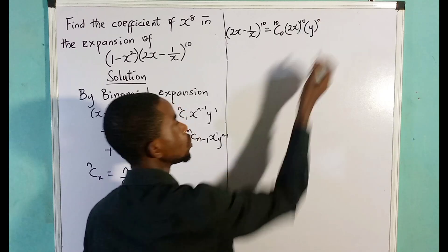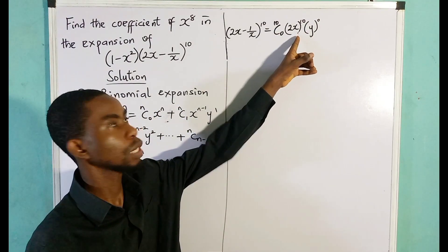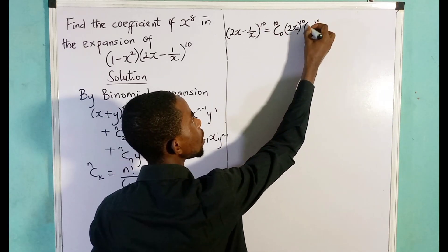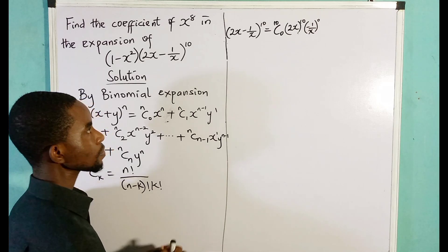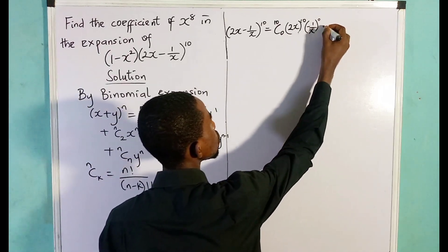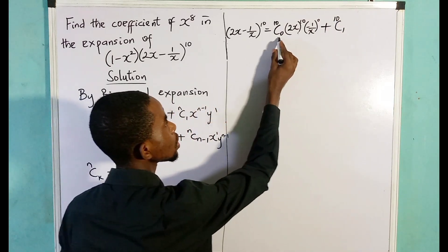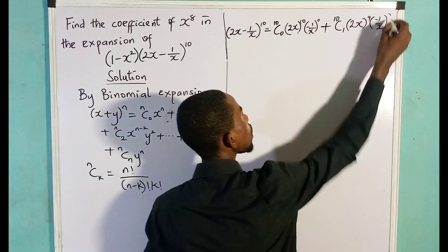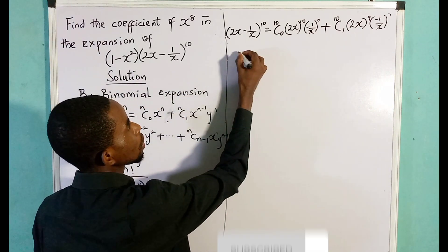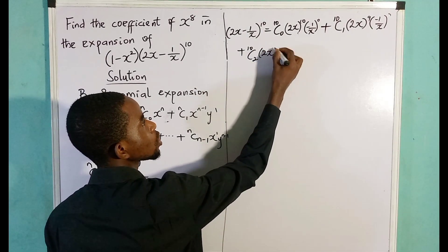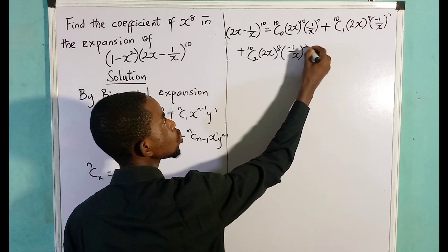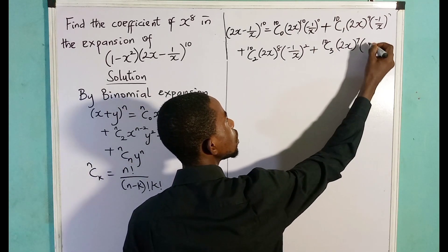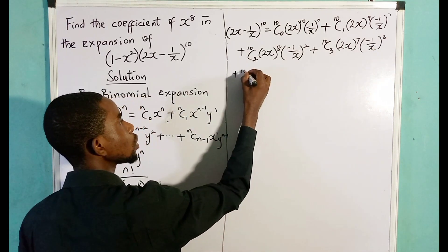Then y raised to the power of 0 — in this case y is minus 1 over x — so that first term is (minus 1/x) to the power of 0. Plus 10 combination 1 times (2x)^9 times (minus 1/x)^1. Plus 10 combination 2 times (2x)^8 times (minus 1/x)^2. Plus 10 combination 3 times (2x)^7 times (minus 1/x)^3.